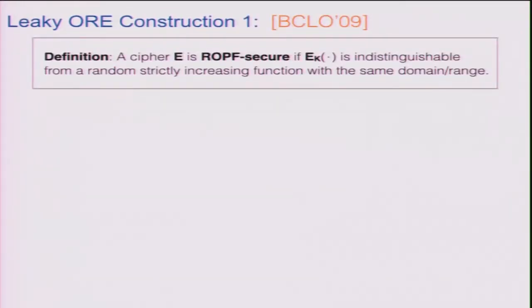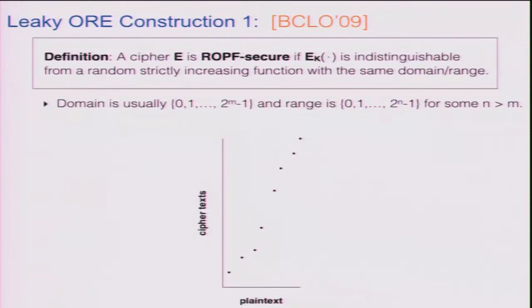This is the Boldyreva et al. definition, which they achieved via a fast construction. They said a cipher E is random order-preserving function (ROPF) secure if the input-output behavior of the cipher with a random key is indistinguishable from a random strictly increasing function with the same domain and range. This is natural for a cryptographer — it's like saying instead of a PRP, which is indistinguishable from a random permutation, this is indistinguishable from a random increasing function. The definition is parameterized by domain and range: the domain has m bits, the range has n bits, and n must be bigger than m.